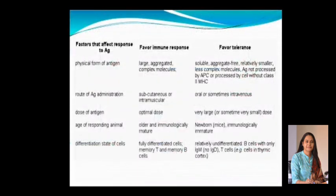There are certain factors that affect whether the response to an antigen will lead to an immune response or to tolerance. These include the physical form of the antigen, the route of antigen administration, the dose of antigen, the age of the responding animal, and the differentiation state of the cells. An antigen that is large, aggregated, and complex will favour an immune response compared to soluble, aggregate-free, or less complex antigens. When a particular antigen is given subcutaneously or intramuscularly, it favours an immune response, but if given orally or sometimes intravenously, it may lead to tolerance. When the dose of antigen is optimal, it favours an immune response, but if the dose is very large or very small, it will lead to tolerance.